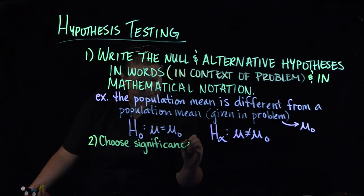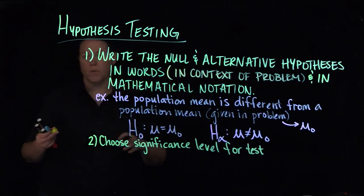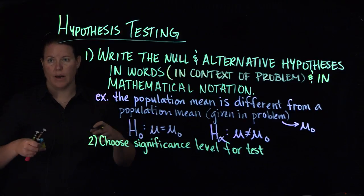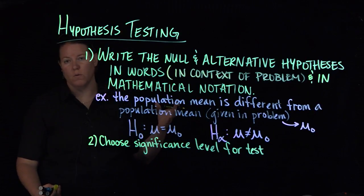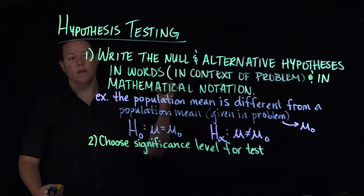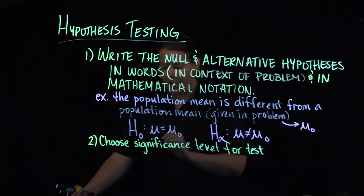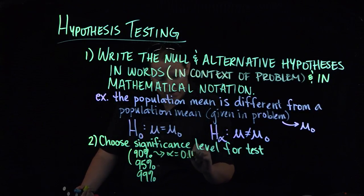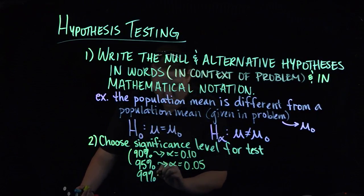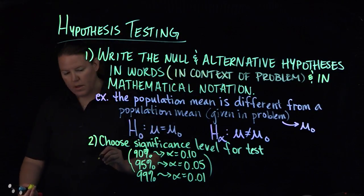Next, we need to choose the significance level for the test. Do we want a 95% confidence level, a 99% confidence level, or a 90% confidence level? How much do we want to say, upon repeated tests, that the true value is going to fall within an interval? Based on 90%, 95%, or 99% confidence, my alpha would be 0.10, 0.05, or 0.01 respectively.